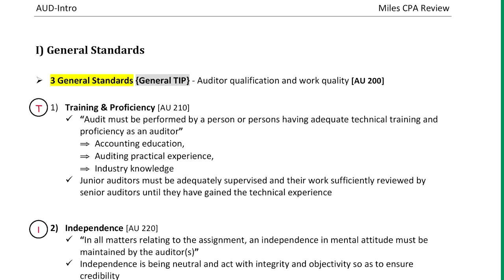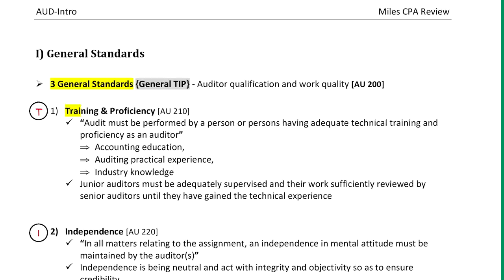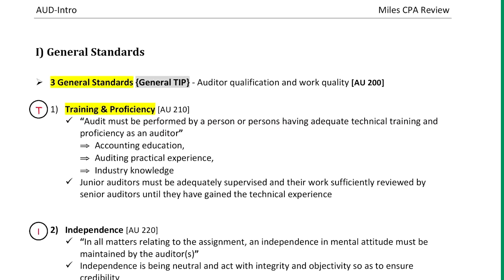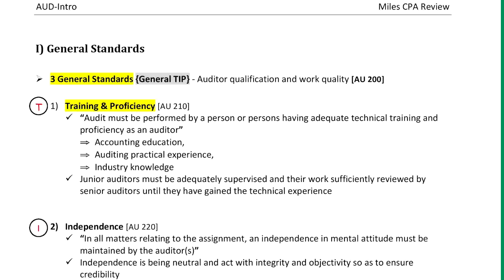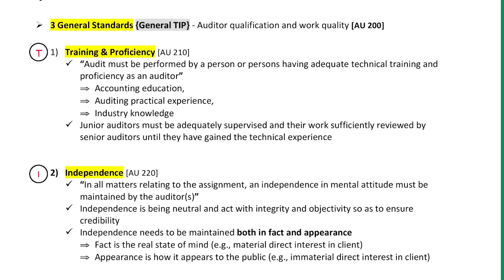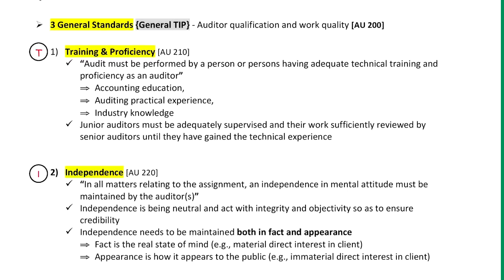The first General Standard — Training and Proficiency: the audit must be performed by a person having adequate technical training and proficiency as an auditor, requiring accounting education, practical experience in auditing, and industry knowledge. Highlight Independence: in all matters relating to the assignment, independence in mental attitude must be maintained by the auditor. Independence is being neutral and acting with integrity and objectivity so as to ensure credibility. Independence must be maintained both in fact and appearance — where fact is the real state of mind and appearance is how it appears to the public.